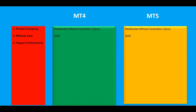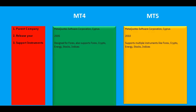Next, let's look at supported instruments — what you can trade on MT4 and MT5. MT4 was initially designed for forex trading but nowadays also supports cryptos, energy, stocks, and indices. MT5 supports a wide range of instruments including forex, cryptos, energy, stocks, and indices. Let's go to the platform and see where we can access these options.